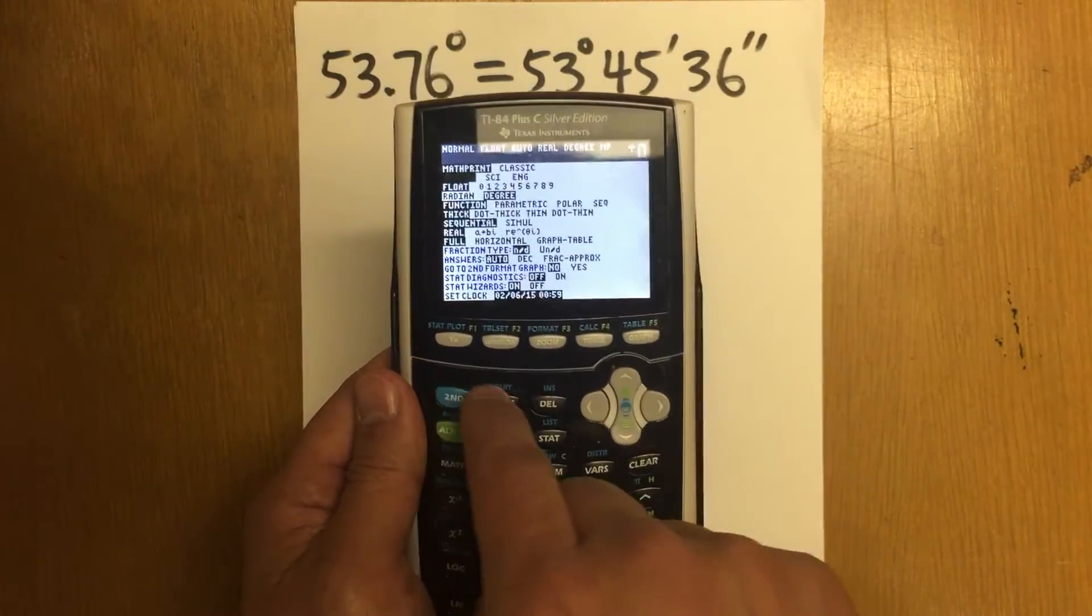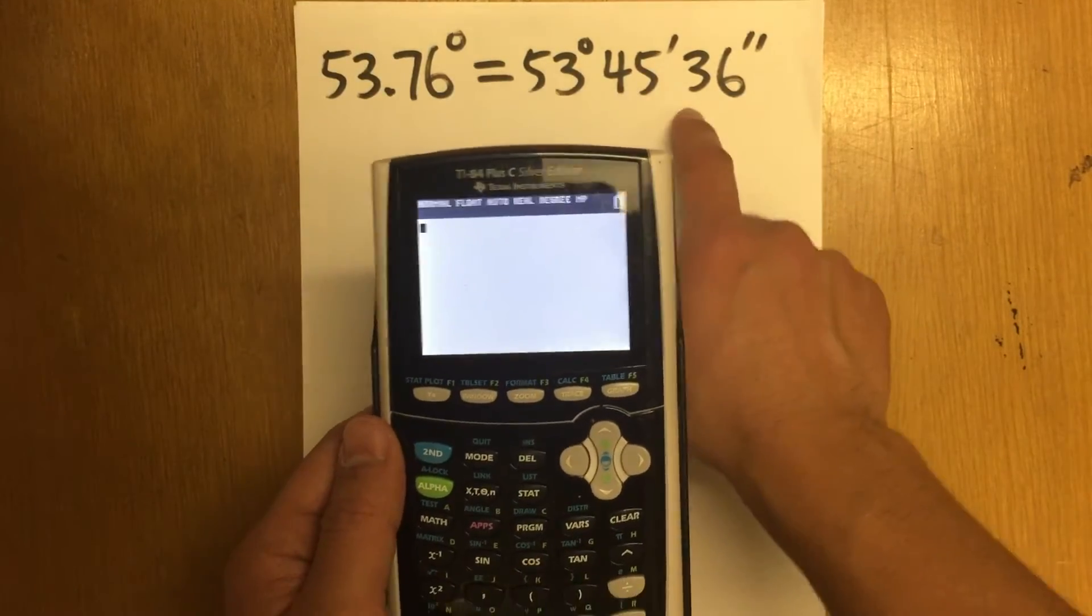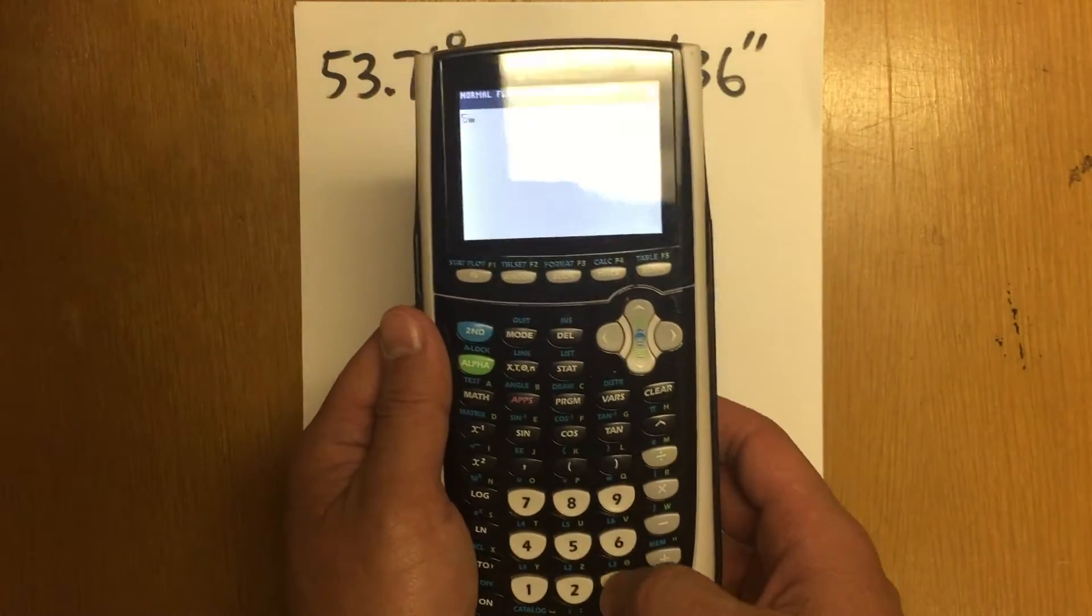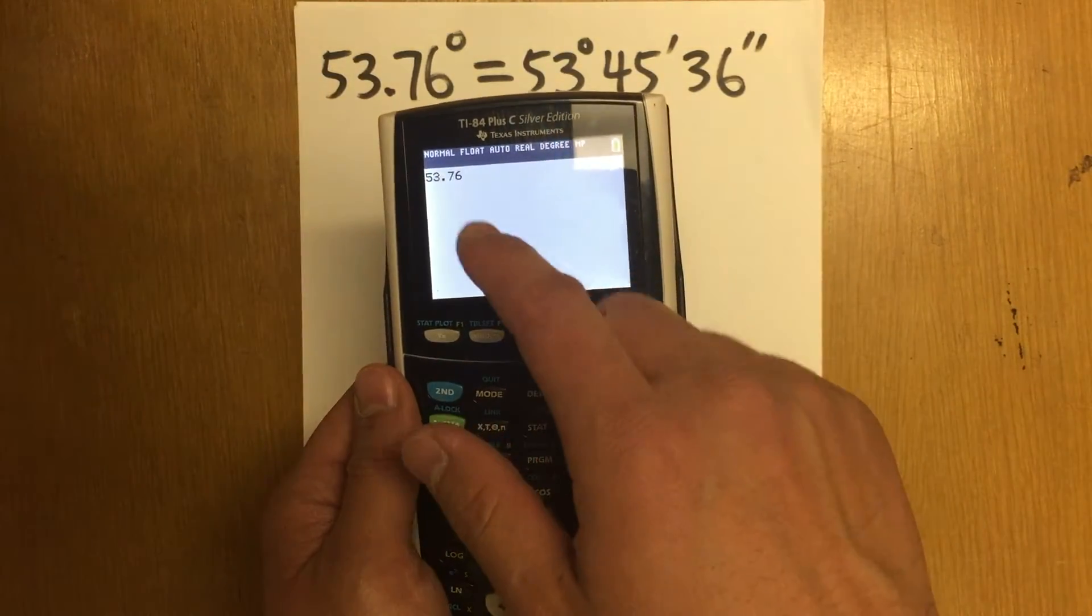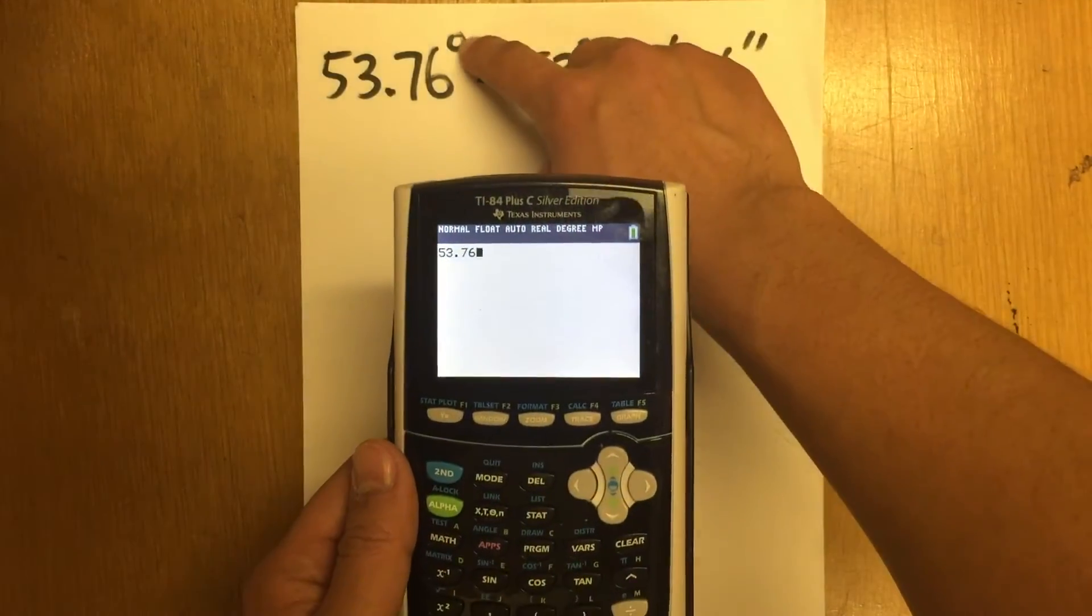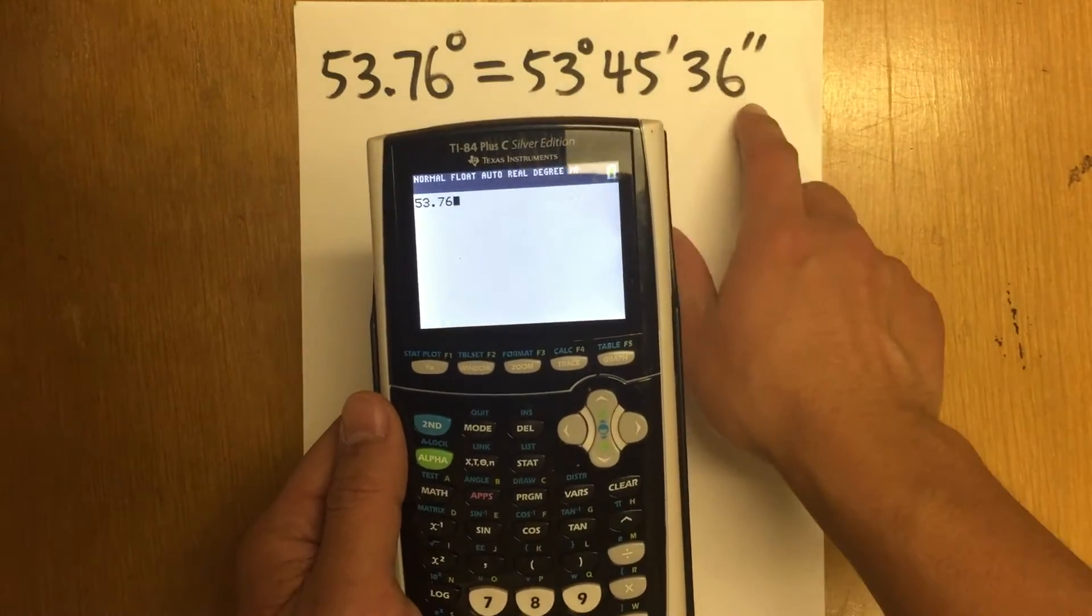Then, I will do second quit to go back to the home menu. And let me do it this way first. Let me press 53.76. And because the calculator is in degree mode already, I don't have to enter the degree symbol.